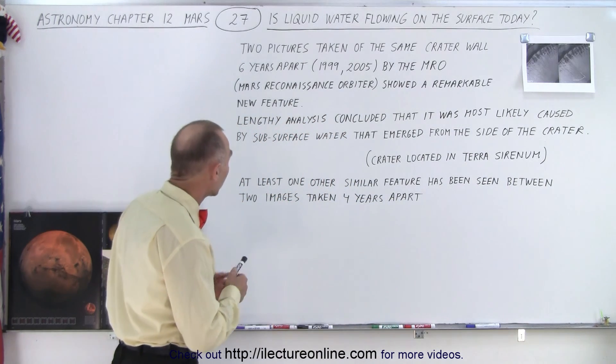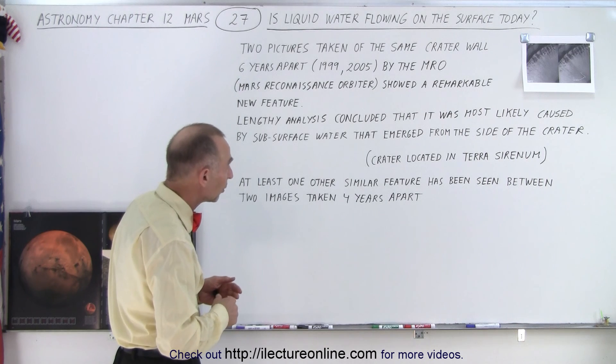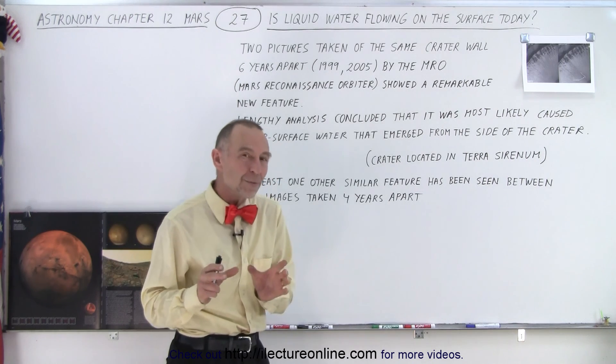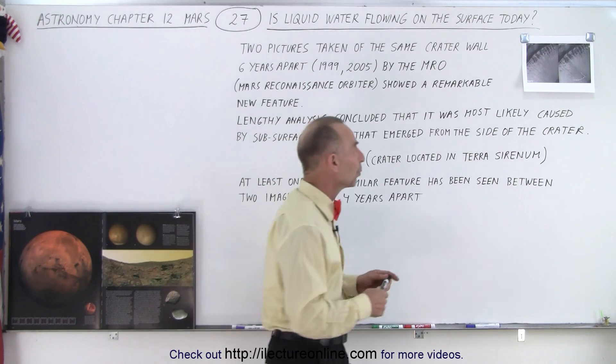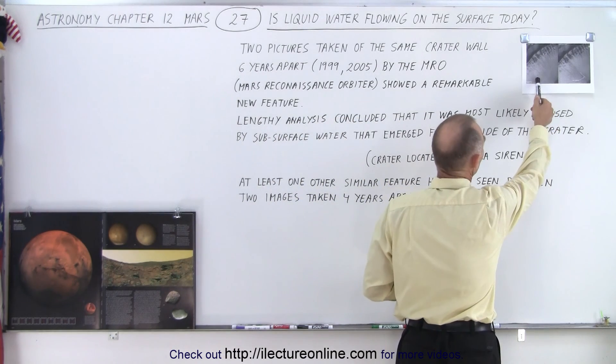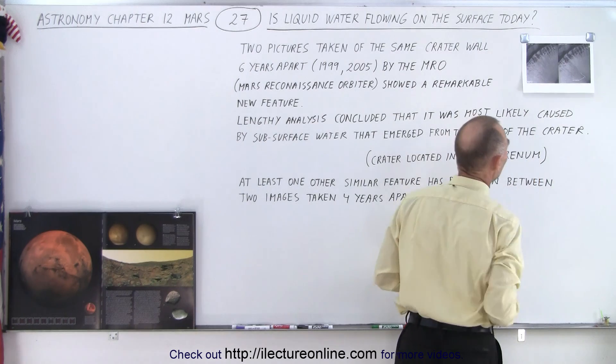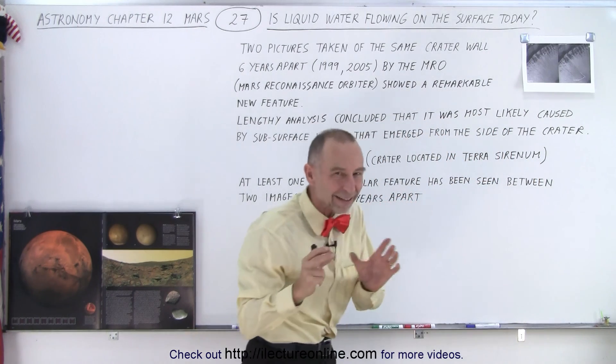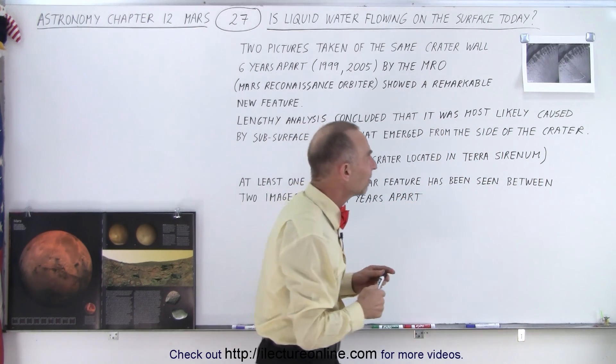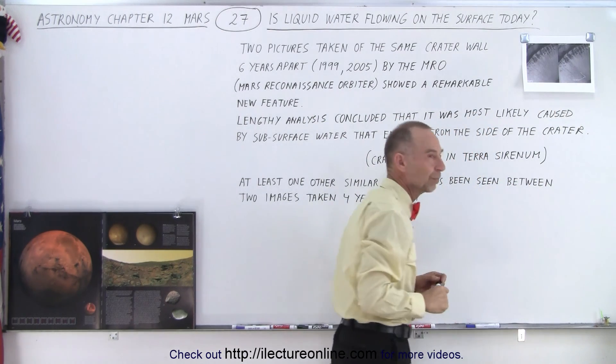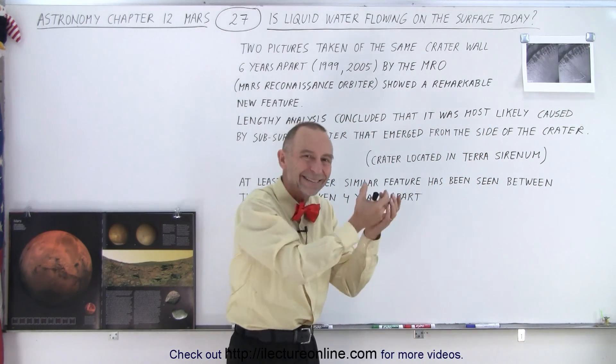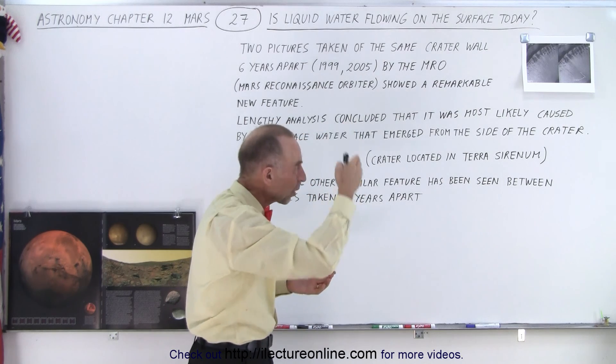With the MRO, as we call it, the Mars Reconnaissance Orbiter, we took pictures of the same craters and crater sides years apart. Here's an example where in 1999 we took this picture, and then six years later we took another picture of the exact same location, and we did see some amazing feature right here that was not there before, a very new extended portion of one of those runoff channels.